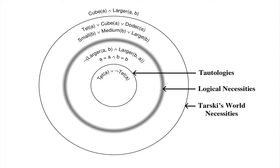This is a graphic from page 102 of Language Proof and Logic, second edition. What you're looking at is a series of concentric circles, the innermost of which represents tautologies, the second largest circle represents logical necessities, and the third largest circle represents Tarski's World necessities. What we're getting here is a set of distinctions between ways of talking about necessarily true sentences.